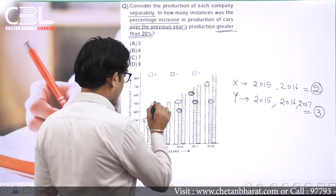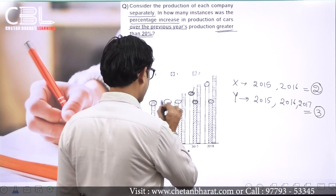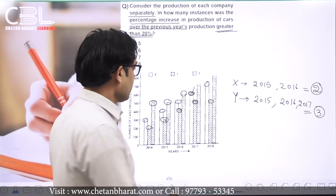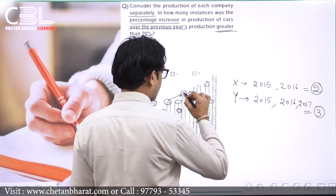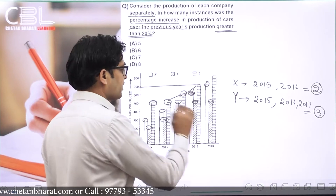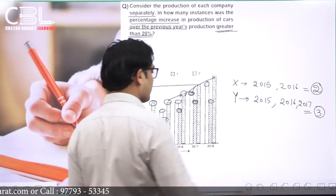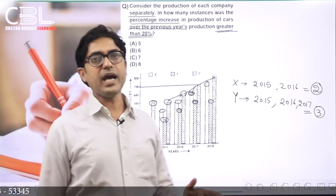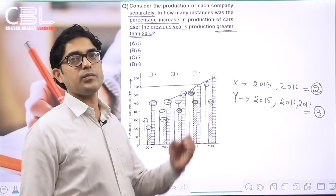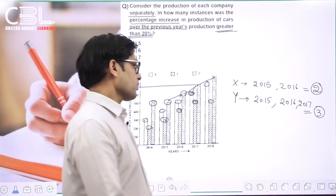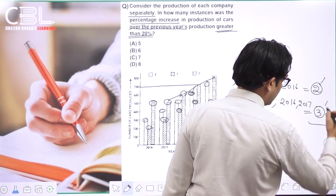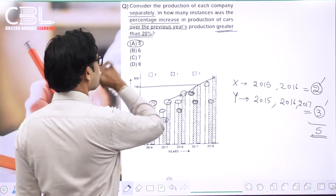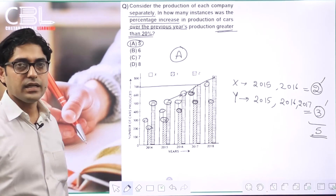Company Z: 2014 से 2015 — value 500 to 500, no change। 2015 से 2016: 500 का 20% = 100, threshold = 600। 2016 में exactly 600 — equal to 20%, not greater। 2016 से 2017: 600 का 20% = 120, threshold = 720। 2017 में 700 < 720 — less than 20%। 2017 से 2018: 700 to 800, less than 20%। Company Z: 0 instances। Total = 2 + 3 + 0 = 5 instances। A option is the answer।